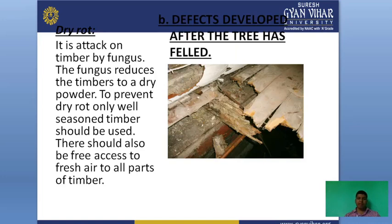Defects developed after the tree has been felled: the first is dry rot — this is an attack on timber by fungus. The fungus reduces the timber to a dry powder. To prevent dry rot, only well-seasoned timber should be used and there should be free access to fresh air to all parts of the timber. Dry rot is caused by fungus attacking the timber, and the defect arising from fungal attack is called dry rot.